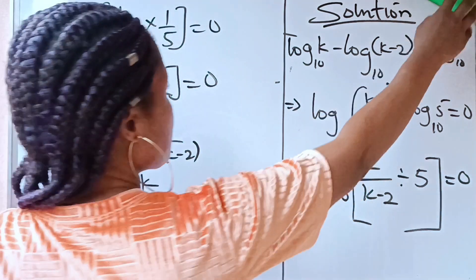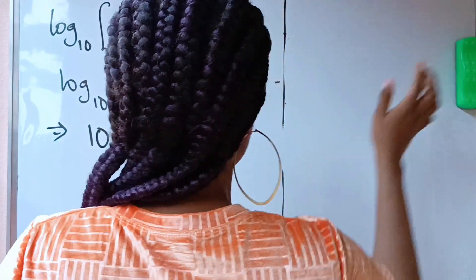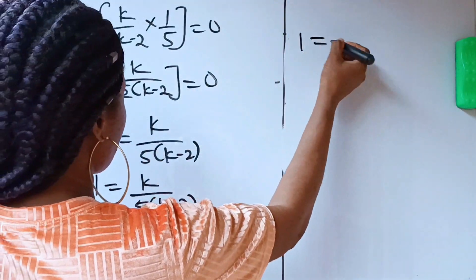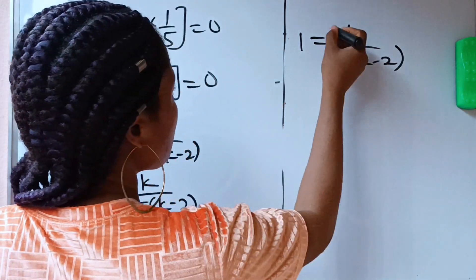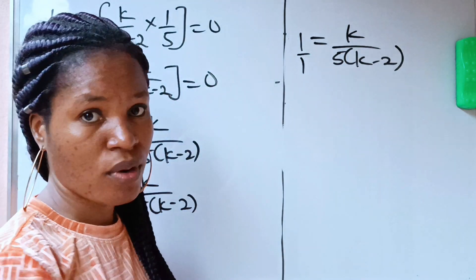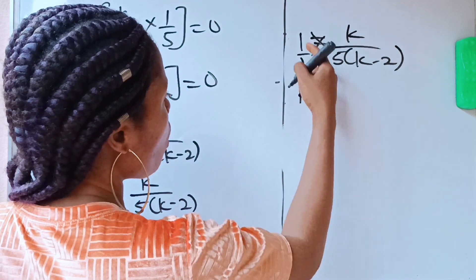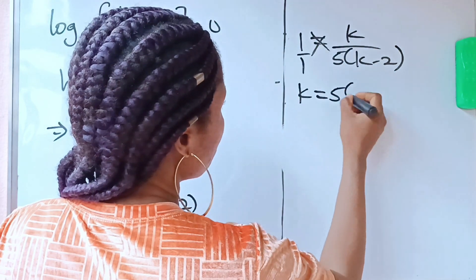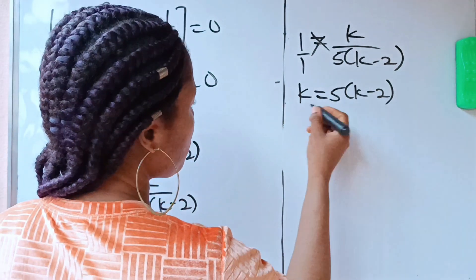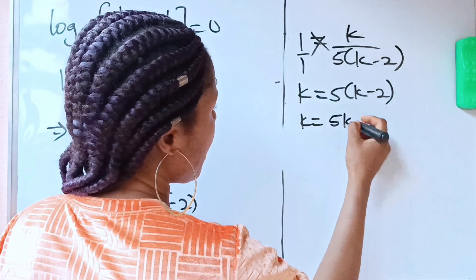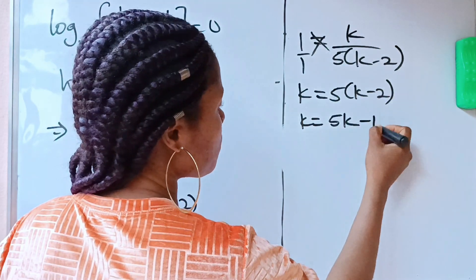So we have 1 equals k over 5(k minus 2). We cannot cross multiply — let's do that. This 1 is the same as 1 over 1. Cross multiplying: k times 1 gives k, equals 1 times 5(k minus 2). Opening the brackets: k equals 5k minus 10.